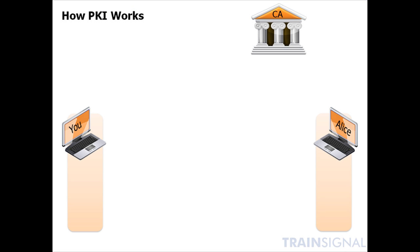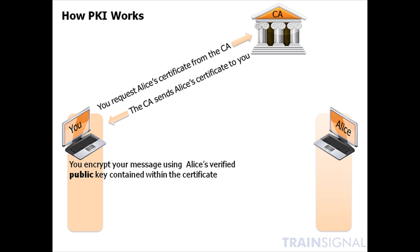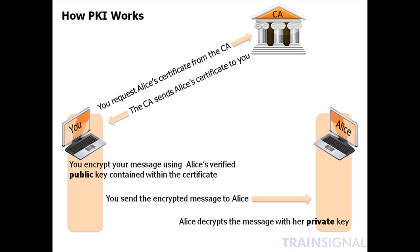Now that we have added the CA, that secure message transfer gets even better. Again, you'll want to send a message to Alice. Here's how it would look using public key infrastructure. Alice has already registered and has a digital certificate from the CA. You request Alice's certificate from the CA — one of the CA's responsibilities is distributing the certs. Or Alice could send it herself; it's public. How we know it actually belongs to Alice is that it's signed by the CA, and we trust the CA. So you get the certificate, encrypt your message using Alice's now-verified public key that's contained within the cert, and send it to Alice. No one can decrypt it along the way without Alice's private key. She uses that private key, decrypts the message, and reads it.